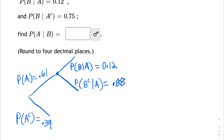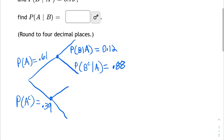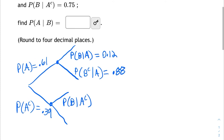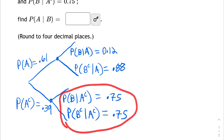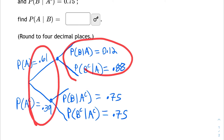So then I'm going to look at this other node here, and it's going to branch off with two branches. But these are going to be under the condition that A's complement has happened. So the probability of B, given that A's complement has happened, is given as 0.75. And then the complement of that would be the probability that B doesn't happen — the probability of B complement — but we're still on the branch where A never happened, A's complement. And those have to be complements of each other, so each of the branches adds up to one.